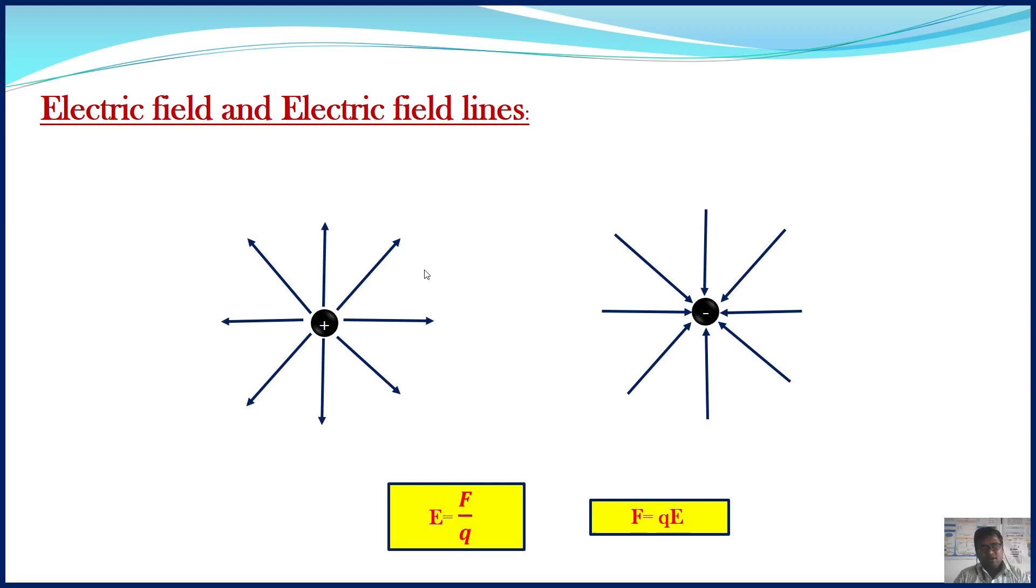As force is a vector quantity, this electric force should have magnitude as well as direction. How to find the direction of this electric force? The direction of electric force depends on the type of charge. If the charge is positive, then the direction of force and electric field are the same. When the charge is negative, the direction of force is opposite to the direction of the electric field.